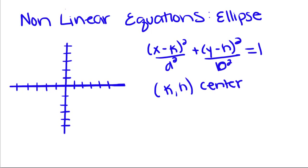So today we're going to talk about our third kind of non-linear graph, which is called an ellipse. So this is the standard form of an ellipse: x minus k squared over a squared plus y minus h squared over b squared equals 1, where k, h is your center.